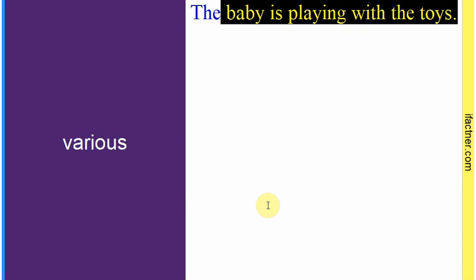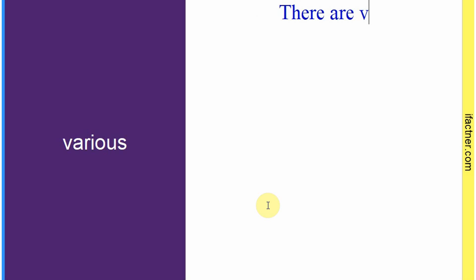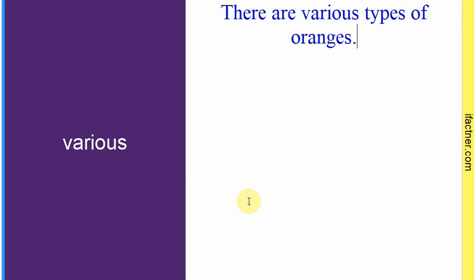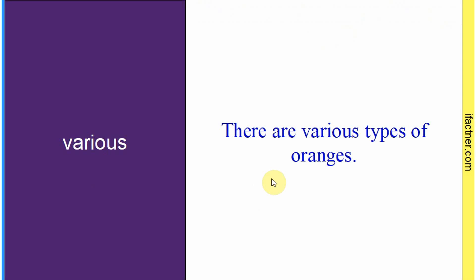Word hai: 'various'. Sentence: 'There are various types of oranges.' Malte ki different qismein hoti hain — various qismein hoti hain, mukhtalif qismein hoti hain. Toh 'various' ka matlab hai 'mukhtalif'. Sentence banaaya: 'There are various types of oranges.'